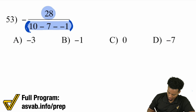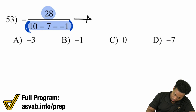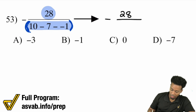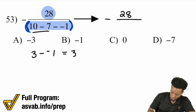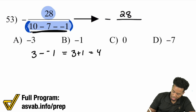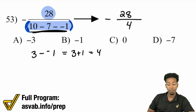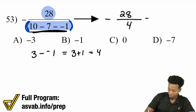The numerator and denominator are each their own group. So the denominator here: 10 minus 7 is 3, and 3 minus negative 1 — that's the same thing as 3 plus 1, which is 4. This entire denominator turns into 4. We have negative 28 up top, so 28 divided by 4 is 7, and since you have a negative in front, that's negative 7.